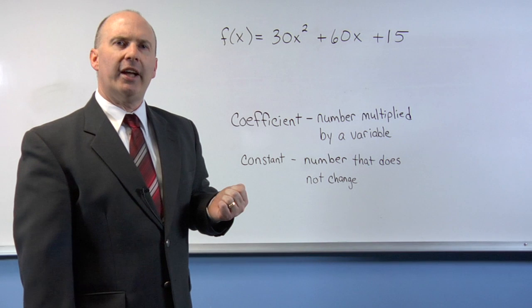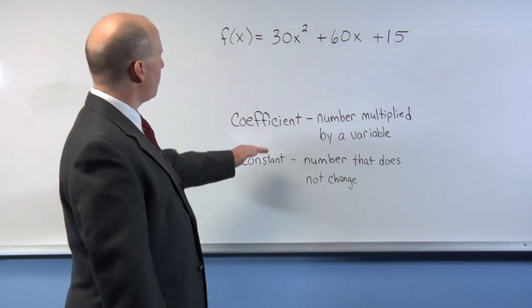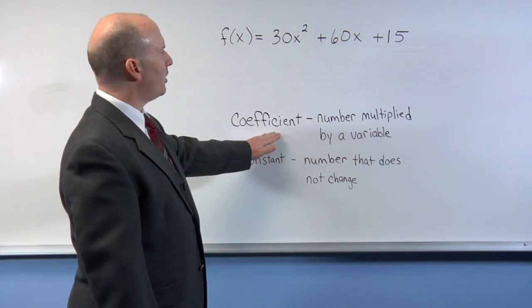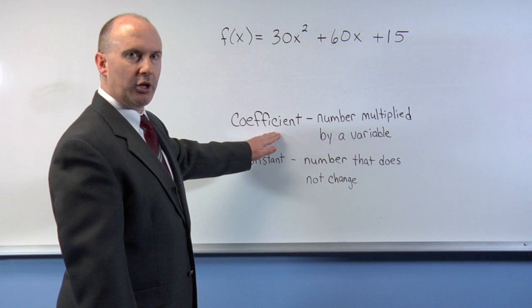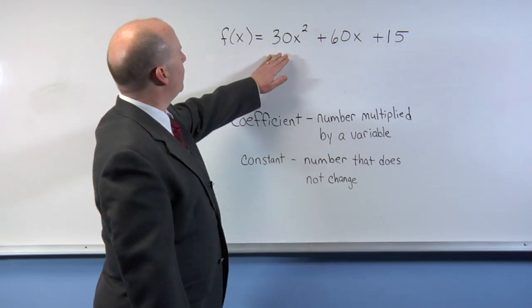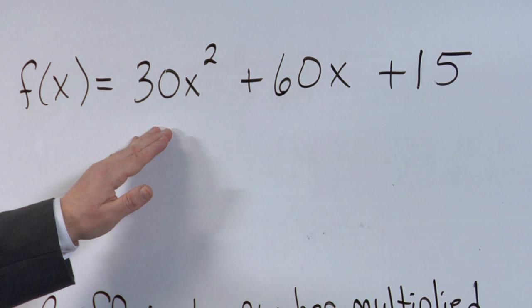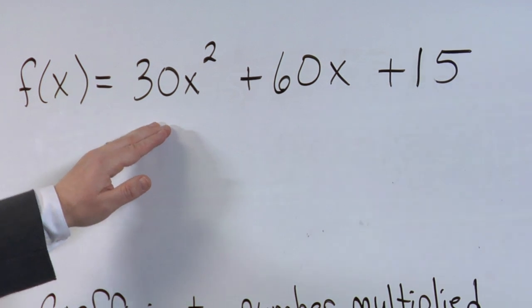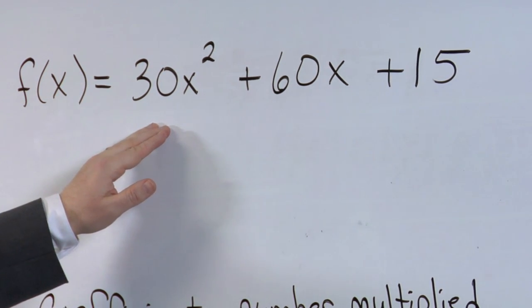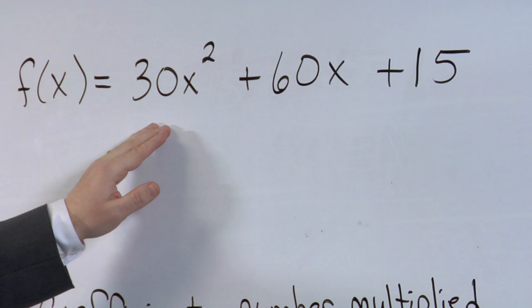To determine whether or not a number is a coefficient, a coefficient is a number multiplied by a variable. For example, the first term is 30 times x squared. 30 is followed by a variable, in fact it's multiplied by it, so therefore 30 is a coefficient.